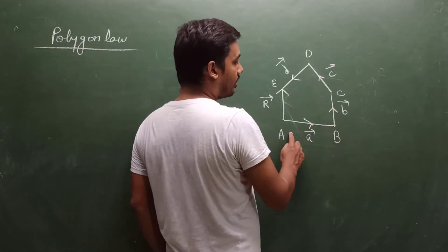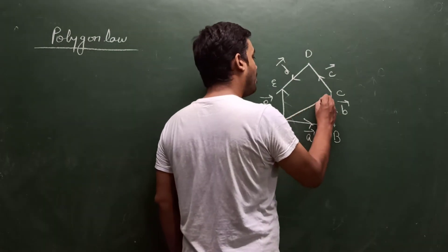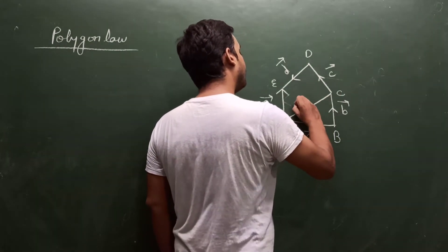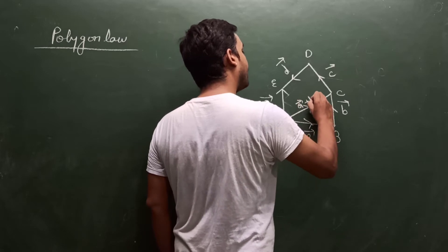Here the triangle shows where vectors A and B join. The resultant is vector A plus vector B.